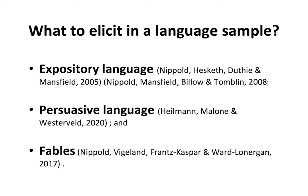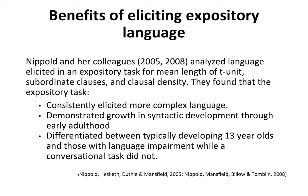Persuasive language — Heilman, Malone, and Westerved all found that persuasive language was also very important, so trying to convince someone of a particular point of view. Fables — Nippold has found fables are useful in treatment. The benefits of eliciting expository language: Nippold and her colleagues found that expository language elicits more complex language, it demonstrates syntactic growth through early adulthood, and it differentiated between typically developing 13-year-olds and those with language impairment, while a conversational task did not.